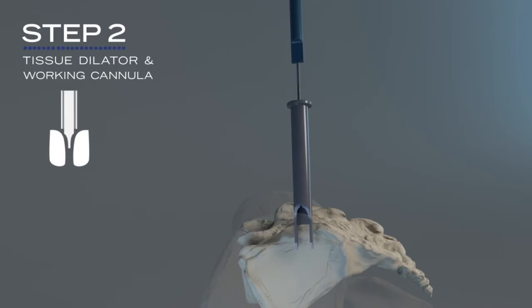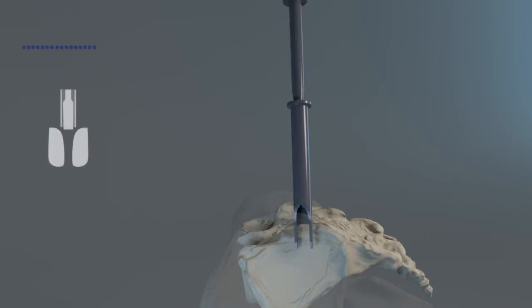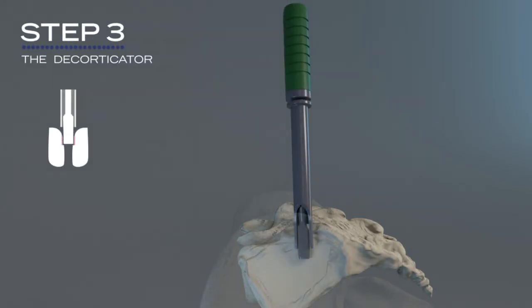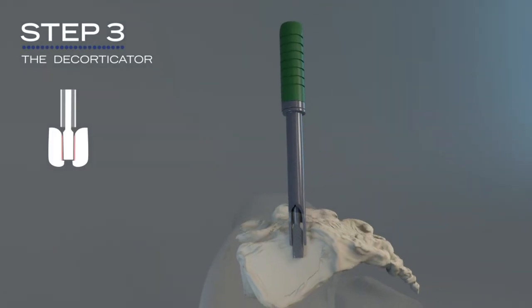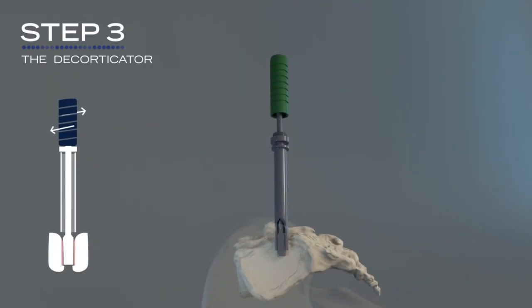Then, the broach rasp is inserted to create room for the link allograft to fit comfortably and at the same time initiate decortication. The broach and rasp are removed with a simple unscrew, reverse hammer, and pull motion.